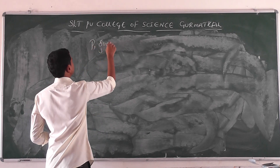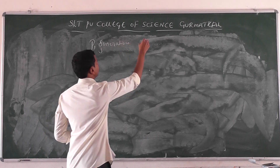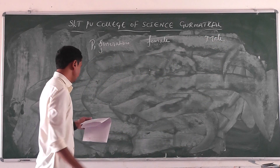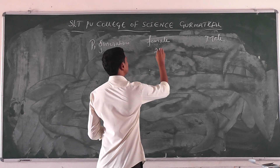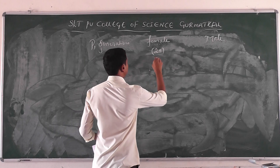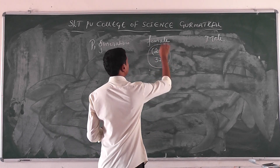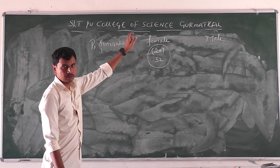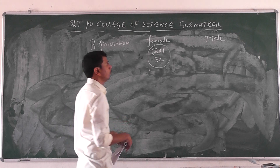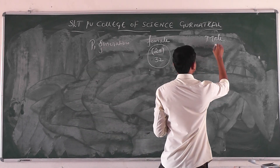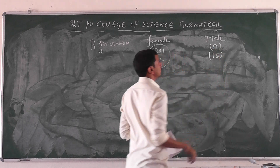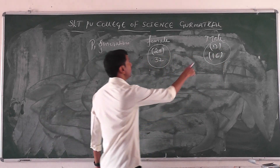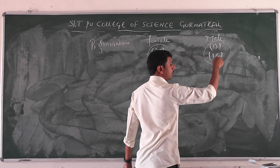At the parent generation level, the female has 2N number of chromosomes — that means 32 chromosomes — so the female is diploid. In the case of the male, it has 16 chromosomes — that means it is haploid. So 2N equals 32 is diploid and N equals 16 is haploid.